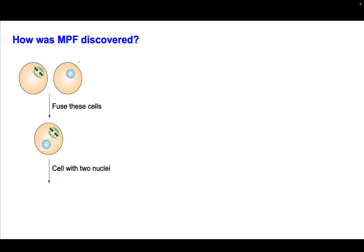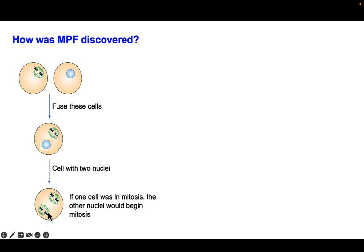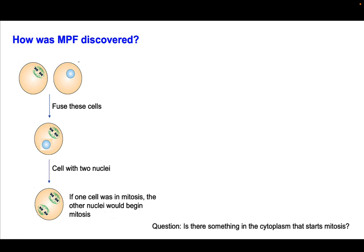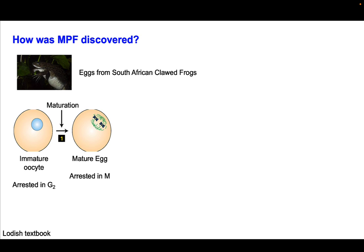The first question: how was MPF discovered? Scientists were doing experiments where they fused together cells in different stages of the cell cycle — fusing a cell undergoing mitosis with a cell in interphase to produce a cell with two nuclei. If they waited, the intact nucleus would eventually undergo mitosis as well. This led scientists to ask: is there something in the cytoplasm that starts mitosis? But because these cells were so small, these fusion experiments were difficult to control.